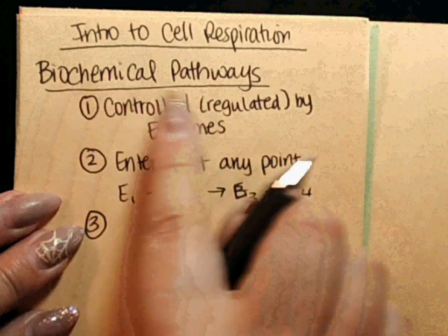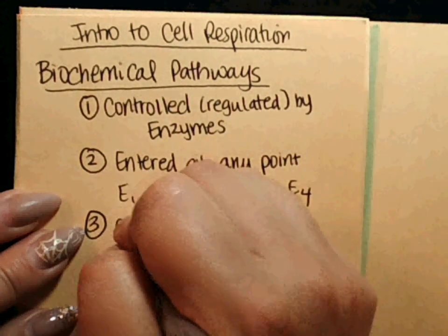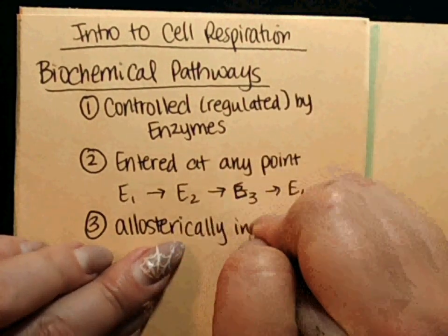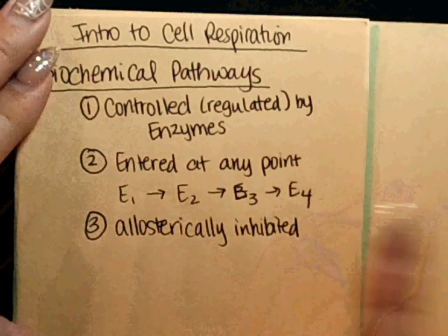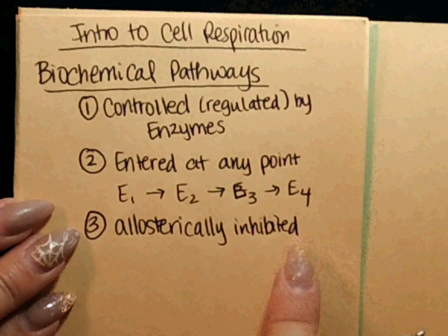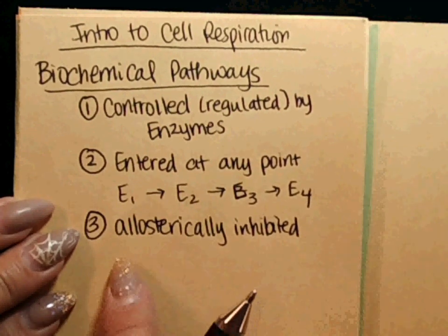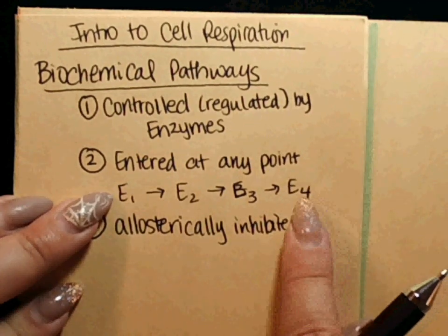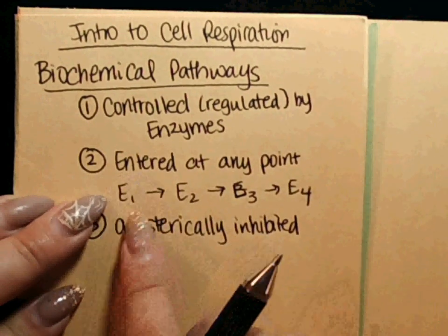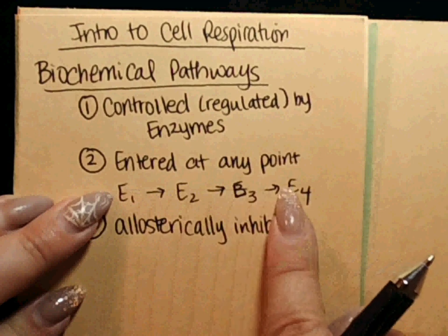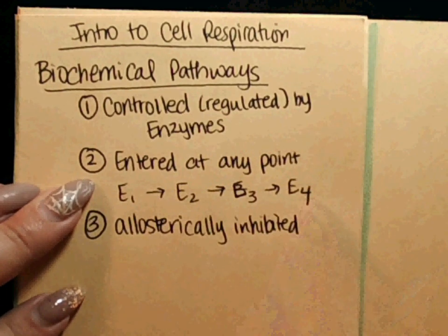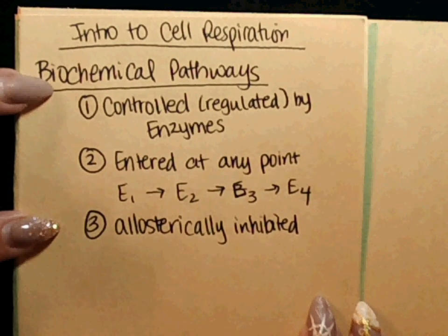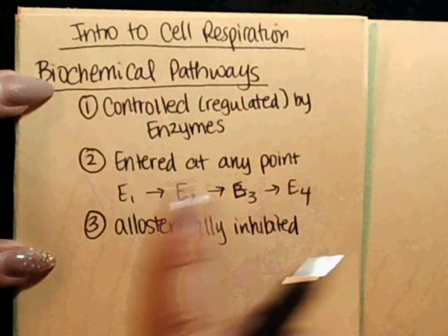The last thing to remember about biochemical pathways is that they can be allosterically inhibited. That means one of the products — even the final product — can bind to the allosteric site of the first enzyme. For example, if the product of enzyme four binds allosterically to enzyme one, it can turn off the entire pathway if enough product has been made.